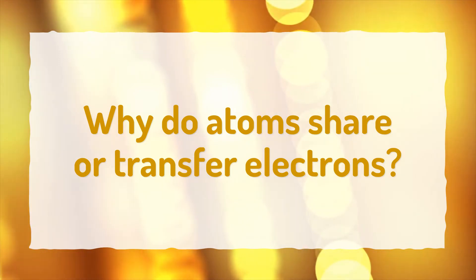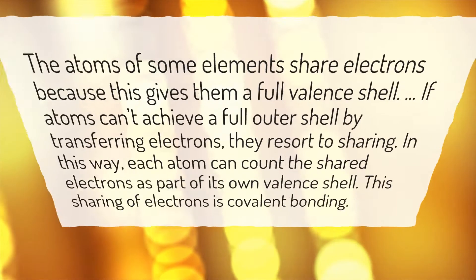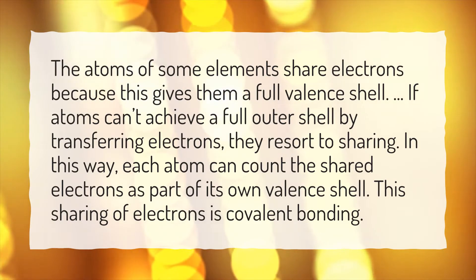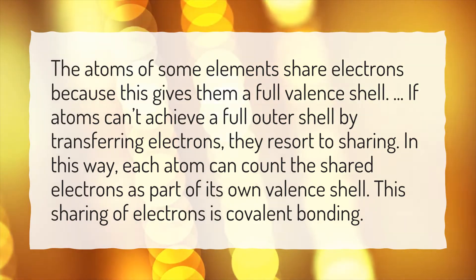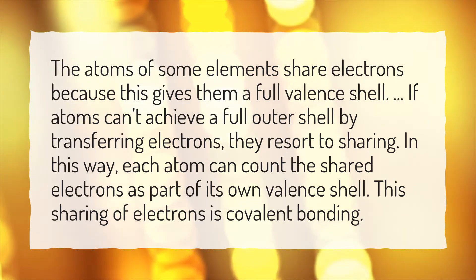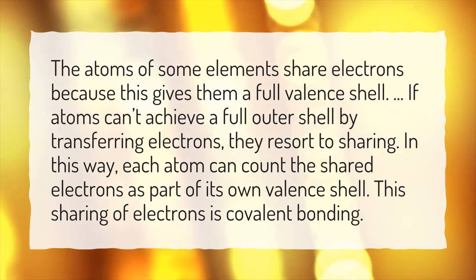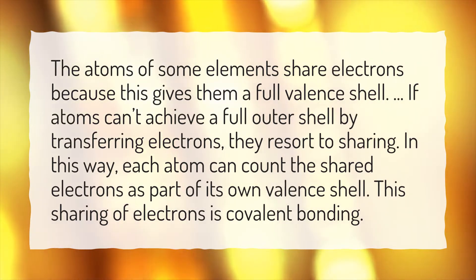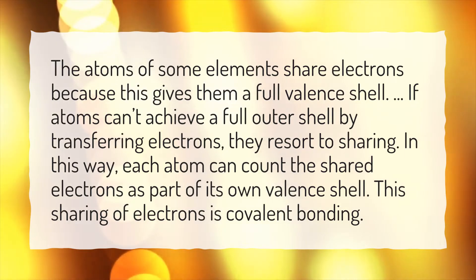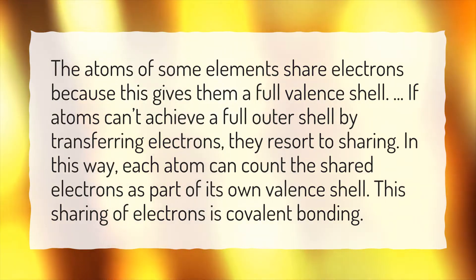Why do atoms share or transfer electrons? The atoms of some elements share electrons because this gives them a full valence shell. If atoms can't achieve a full outer shell by transferring electrons, they resort to sharing. In this way, each atom can count the shared electrons as part of its own valence shell. This sharing of electrons is covalent bonding.